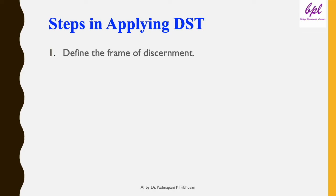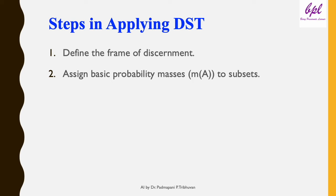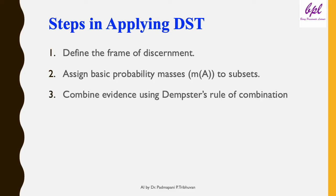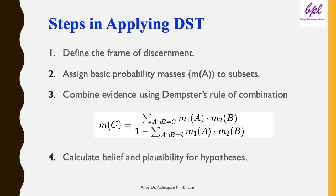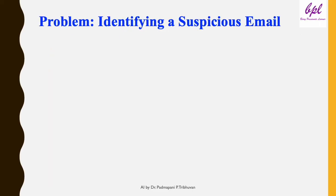The application of DST involves four main steps. First, define the frame of discernment. Second, assign basic probability masses m(A) to subsets. Third, combine evidence using Dempster's rule of combination: M(C) = Σ_{A∩B=C} M1(A)·M2(B) / (1 − Σ_{A∩B=∅} M1(A)·M2(B)). This formula calculates the combined basic probability assignment for a subset C of the frame of discernment Θ. M1 and M2 represent evidence from two independent sources. The fourth step is to calculate belief and possibility for the hypothesis. Now let's apply these steps to a problem.